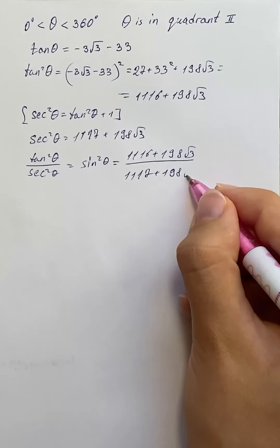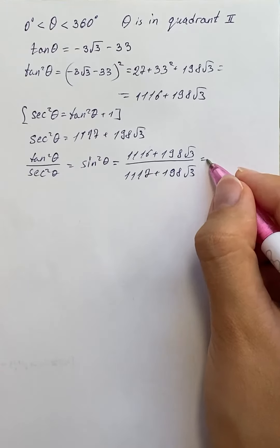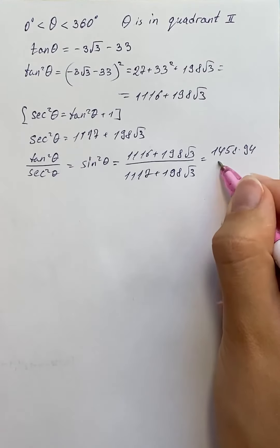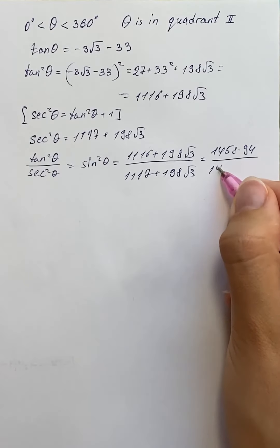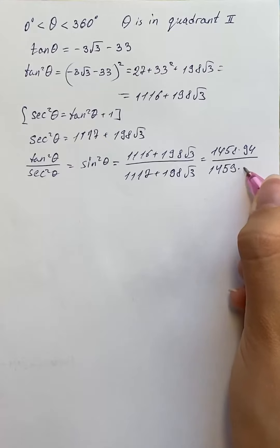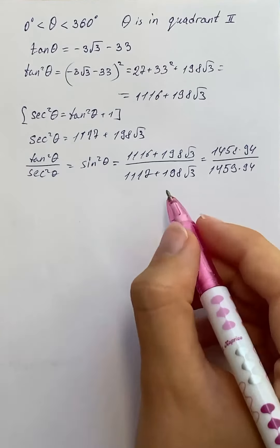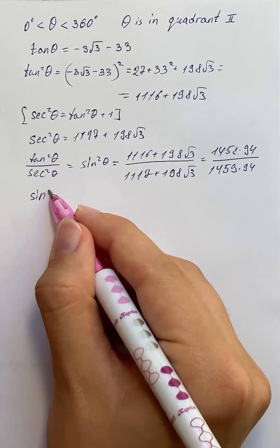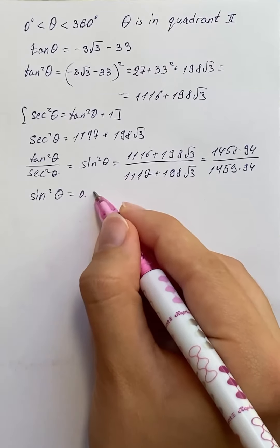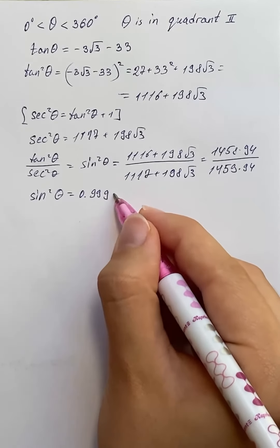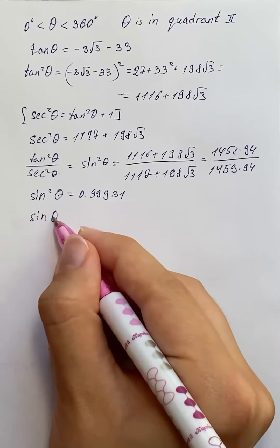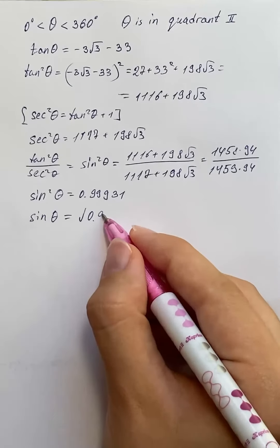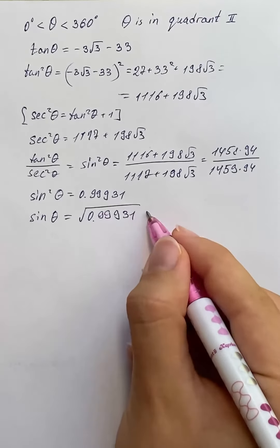That simplifies to 1458 times 94 over 1459 times 94. Therefore, sin squared theta equals 0.99931, and sin theta equals the square root of 0.99931.